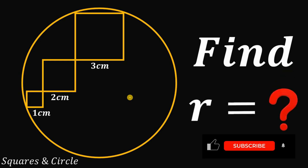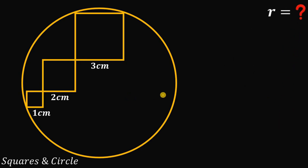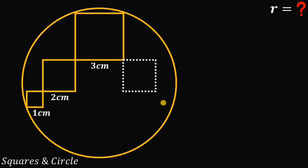Now let's see if you got the correct answer. Our goal in this question is to find the length of the radius r. To answer this question, we will use the symmetry of this figure. We're going to draw another two-by-two square on this side and another one-by-one square on the other side.